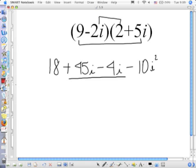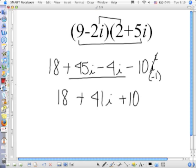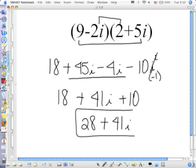Now here, when I look at these two middle terms, they both are alike. They both have an i to the first power, so I'm going to put them together. But if you look at that last term, what does i squared represent? i squared is negative 1. So this is negative 10 times negative 1, which turns it into positive 10. And then you finish by putting your whole number constants together. 18 plus 10 is 28 plus 41i.